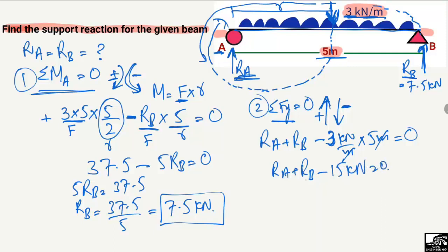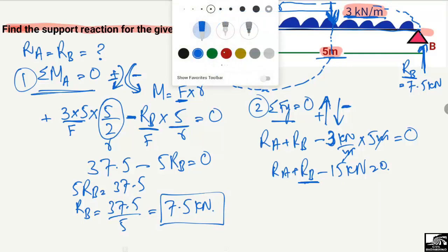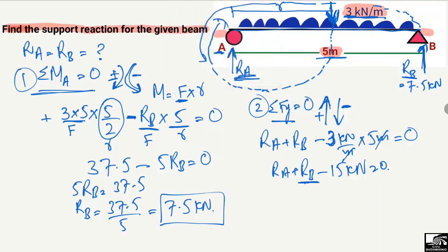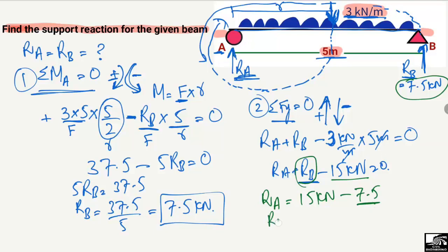We know that R_B is 7.5 kilonewton. Shifting terms to the right side: R_A = 15 − R_B = 15 − 7.5. Therefore, R_A comes out to be 7.5 kilonewton.